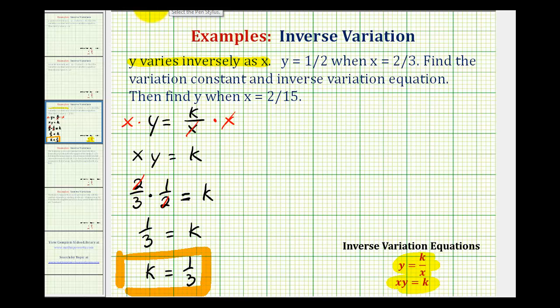And now for the inverse variation equation, we're going to use y equals k divided by x, where we're going to substitute one-third for k. So our equation for this problem is y equals one-third divided by x.